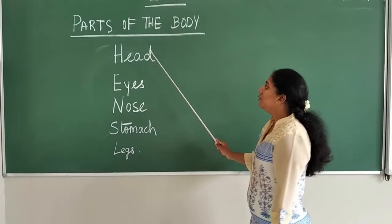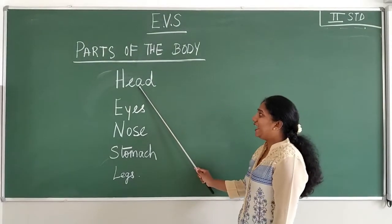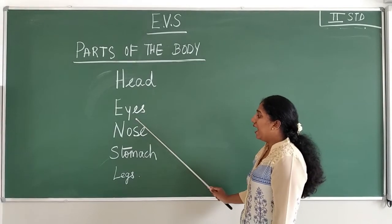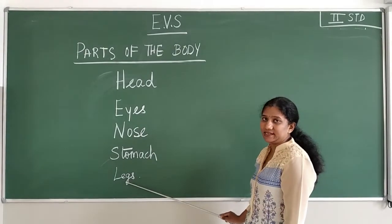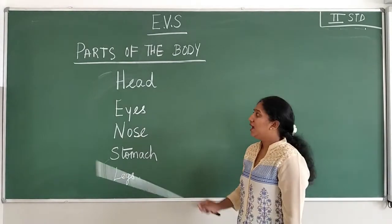And here I have written five parts of our body. That is head, eyes, nose, stomach and legs. I want all of you to practice these spellings. Understood?